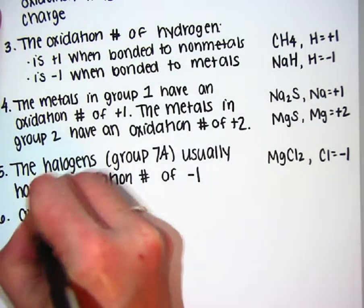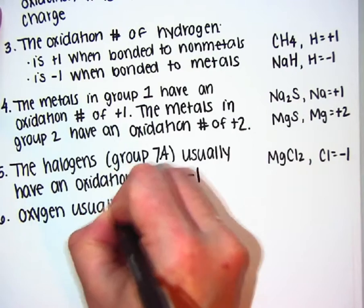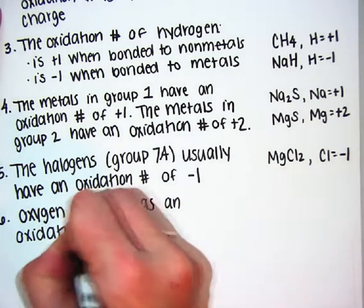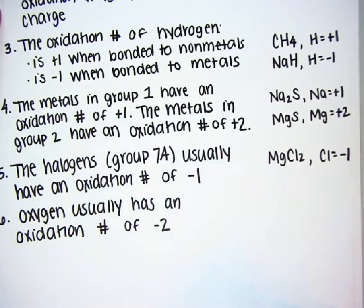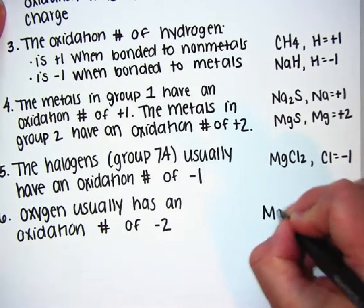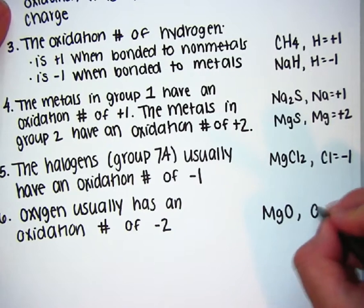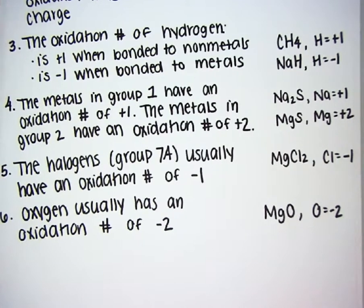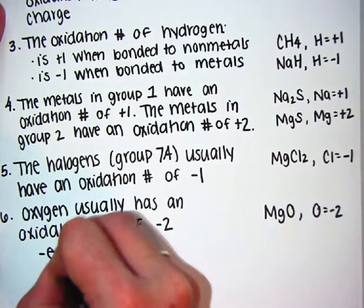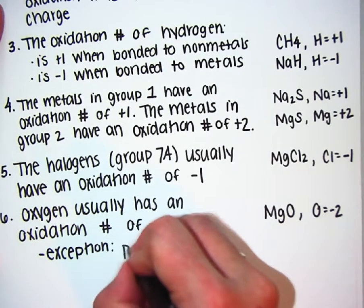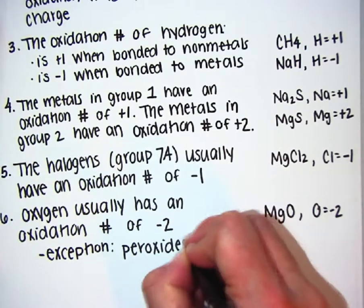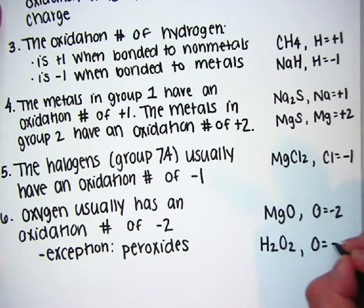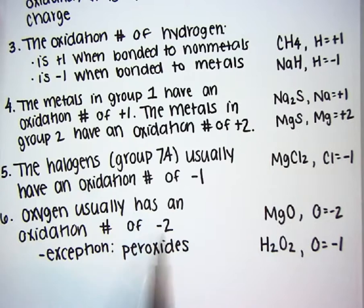Rule number six: oxygen usually has an oxidation number of negative two. For example, in magnesium oxide, oxygen would be negative two. There is one exception: peroxides. In hydrogen peroxide, oxygen can actually be negative one. So it is usually negative two, but not always.